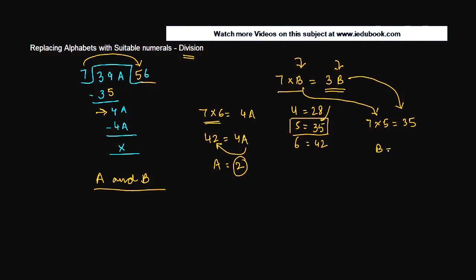So we got B is equal to 5 and A is equal to 2. That's how basically you try to find out the value of alphabets in case you have division.